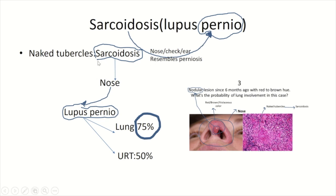The importance of lupus pernio refers to its association with lung and upper respiratory tract involvement. Lung sarcoidosis is found in 70% of patients with lupus pernio, and upper respiratory tract sarcoidosis is found in 50% of patients with lupus pernio. Therefore, the answer to the question — what's the probability of lung involvement in this case — is 75%.